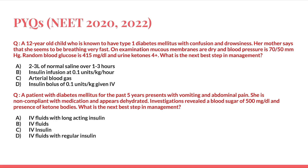The second question: a patient with diabetes mellitus for the past five years presents with vomiting and abdominal pain. She is non-compliant with medication and appears dehydrated. Investigations revealed a blood sugar of 500 mg/dL and presence of ketone bodies. What is the next best step in management?